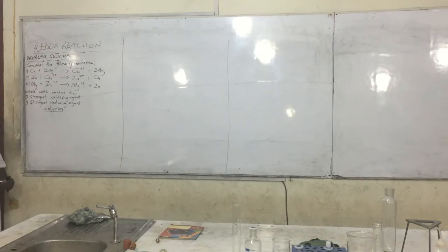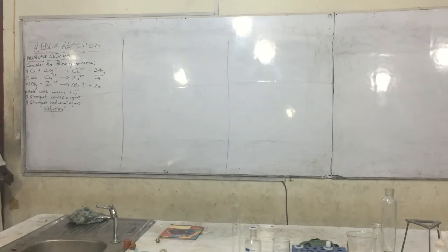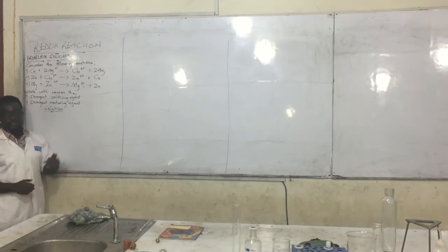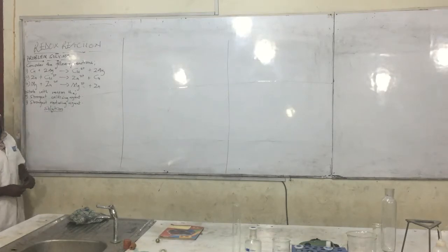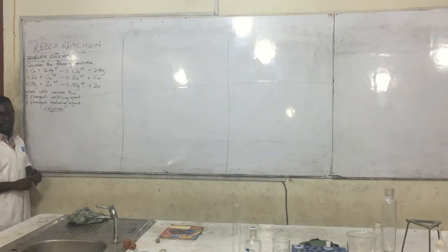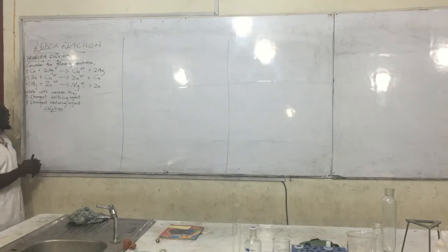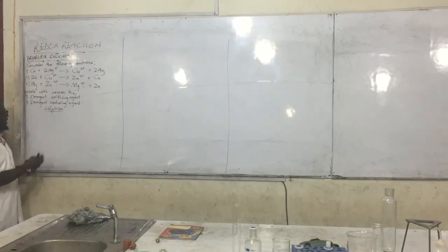State with reason: A, the strongest oxidizing agent; B, the strongest reducing agent. That is our problem for today. We are going to solve it — we have already learnt the concept under the identification of oxidizing agents and the identification of reducing agents.